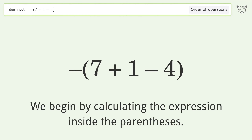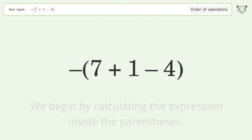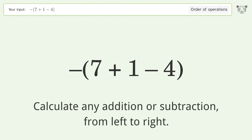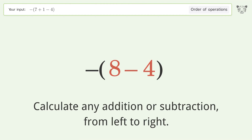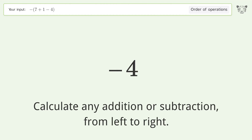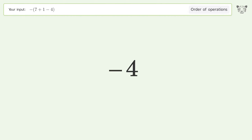We begin by calculating the expression inside the parentheses. Calculate any addition or subtraction from left to right: 7 plus 1 equals 8. Then 8 minus 4 equals 4, and so the final result is negative 4.